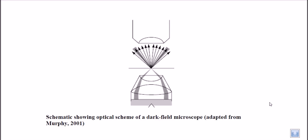Now let us talk about the dark field microscope. Unlike bright field microscopy, which is very common, in bright field microscopy the basic system is that we have a light source, and after the light source we have a condenser lens which condenses the beam of light into a particular point.